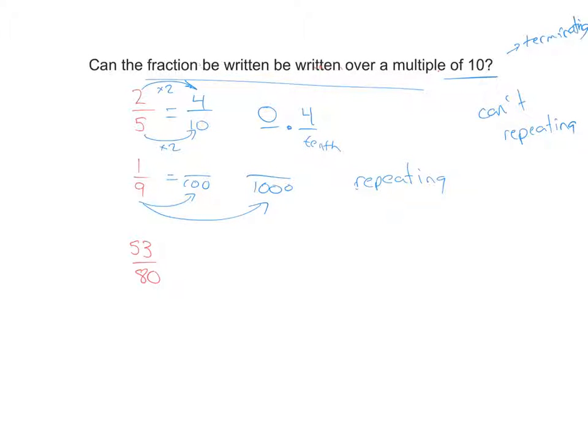Now let's take a look at our last one here. We have 53 out of 80. Pretty clear, you can't write 53 out of 80 out of 10. So we're not even going to try. Could you write it as out of 100? No, because if you multiply by 2, we're at 160. So that doesn't work. Could you multiply it by something to get 1,000? And the answer is no, I don't think that's going to work either.